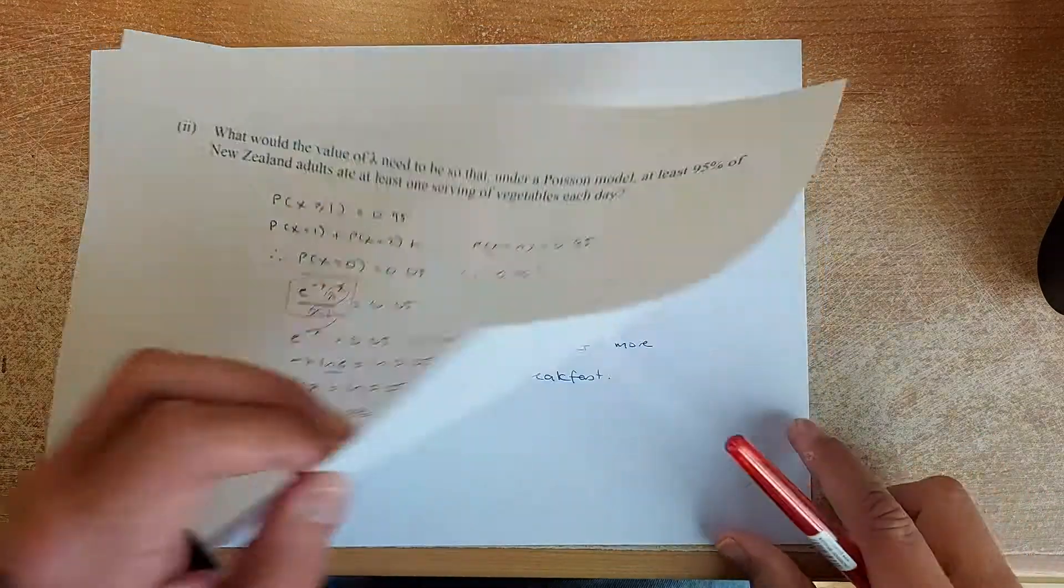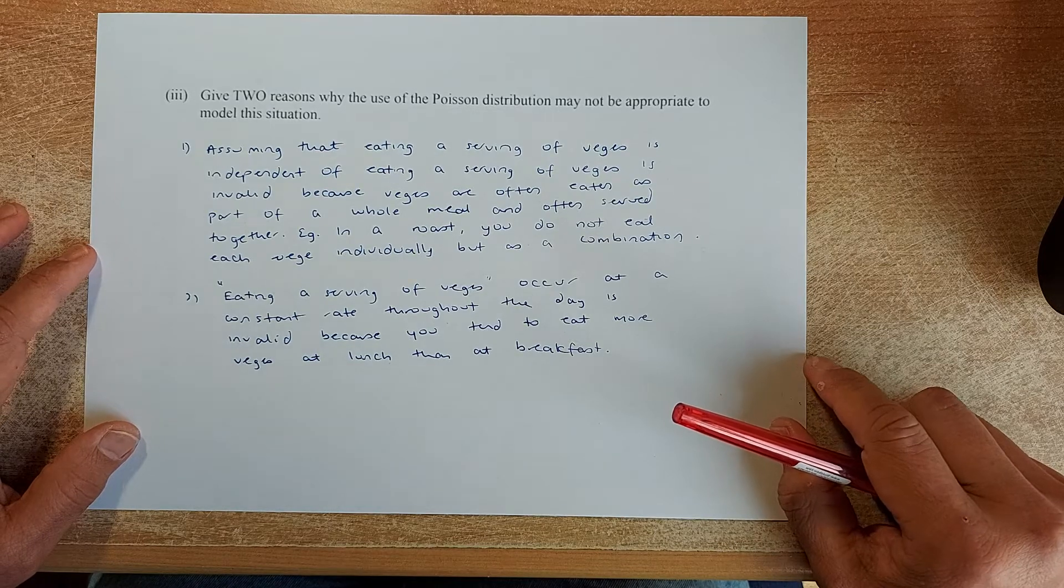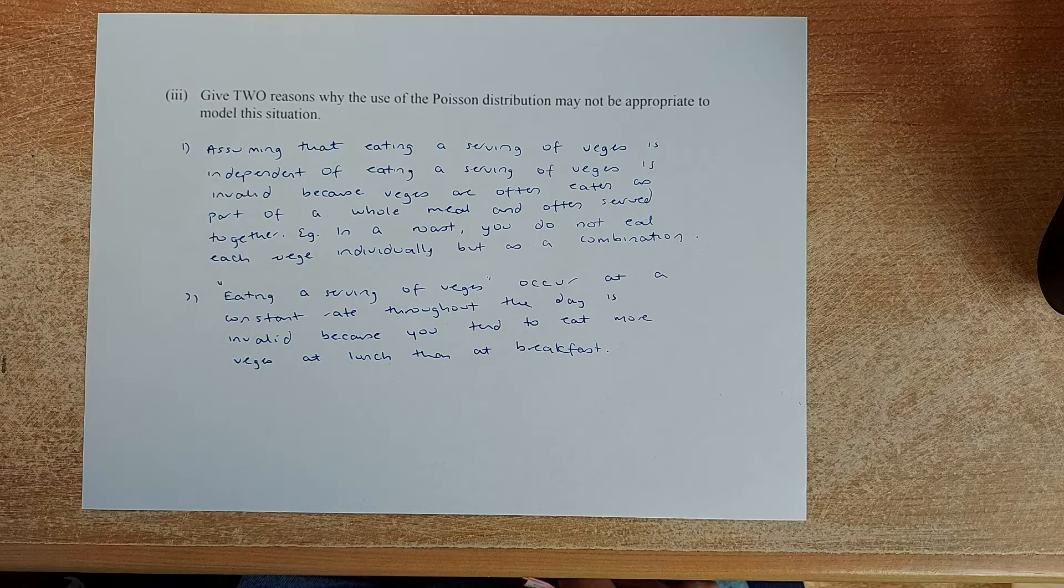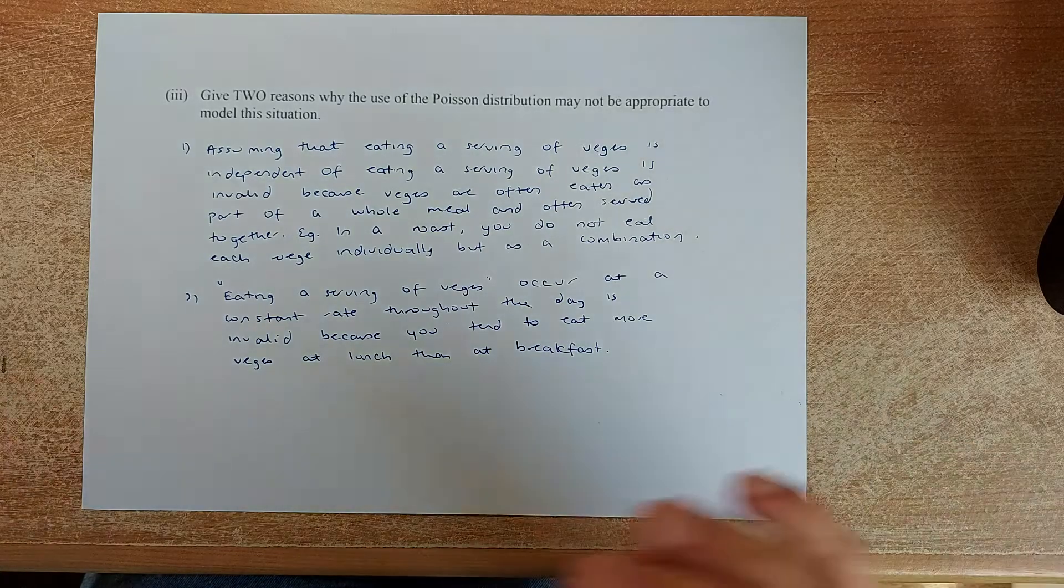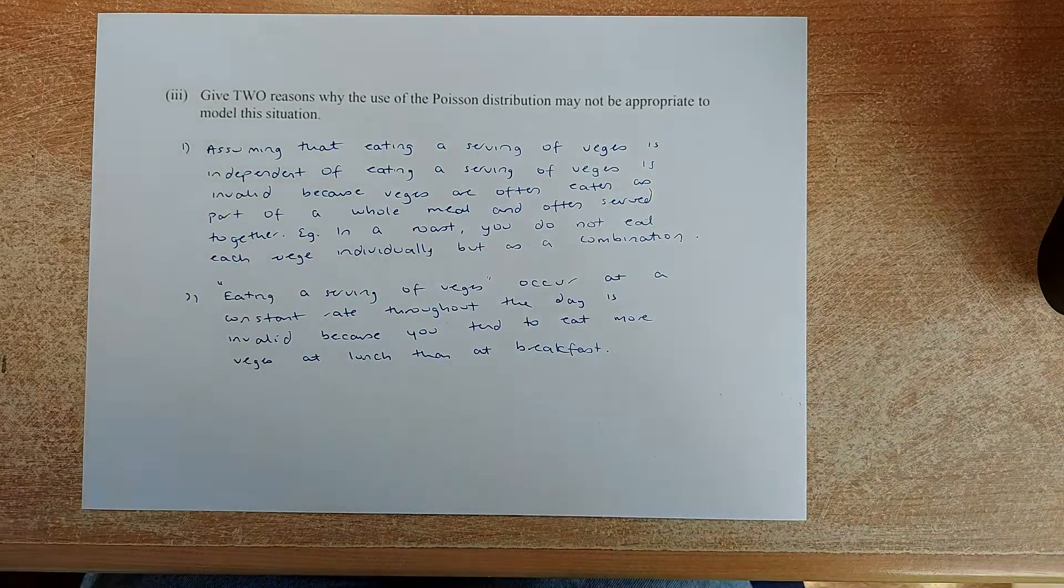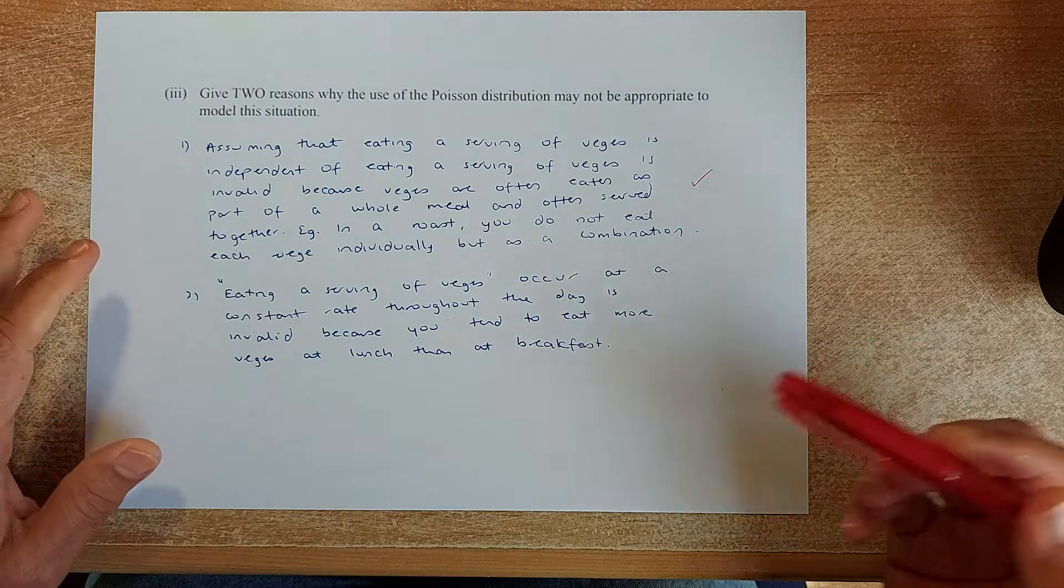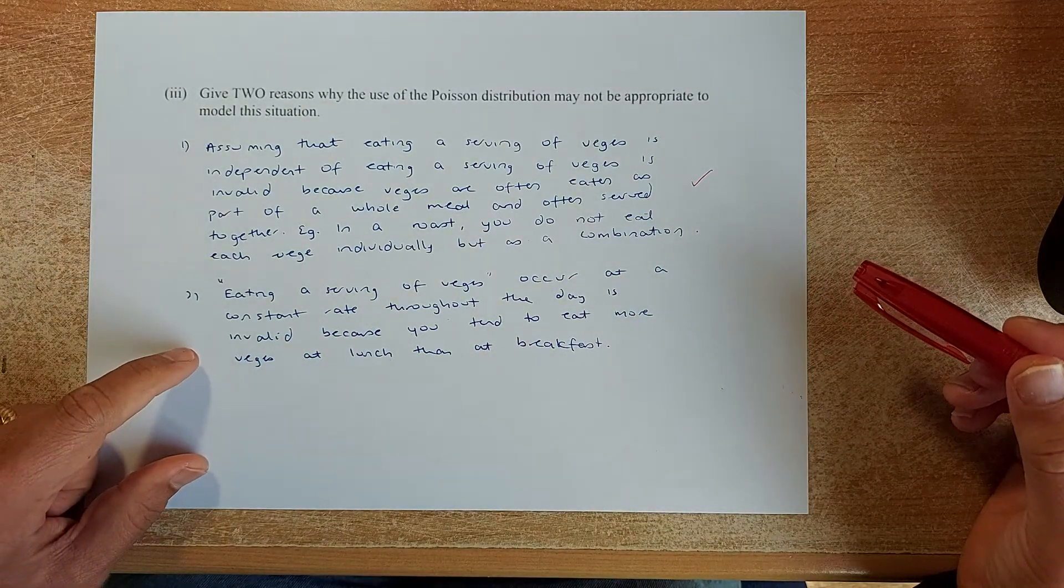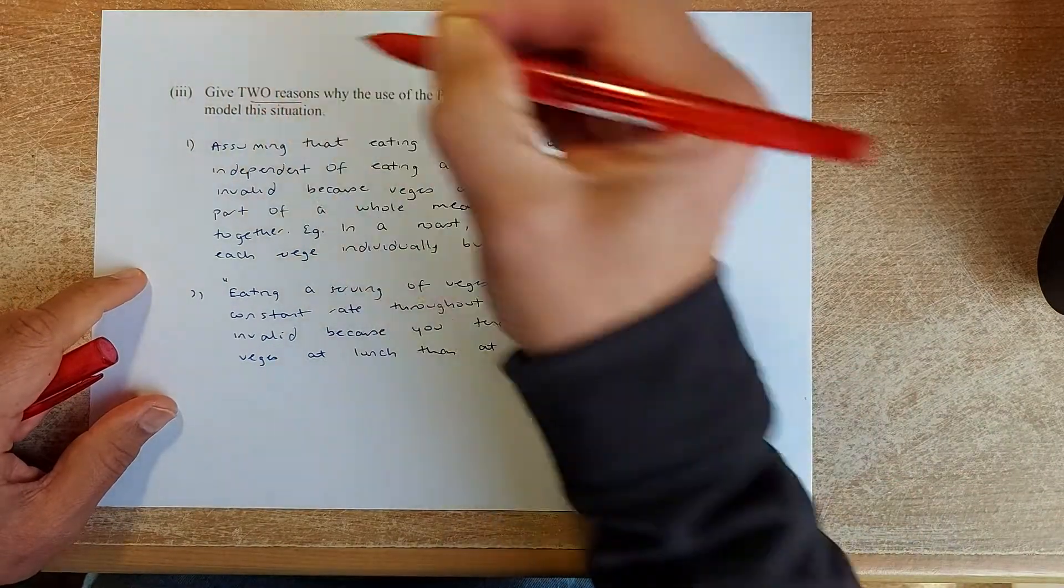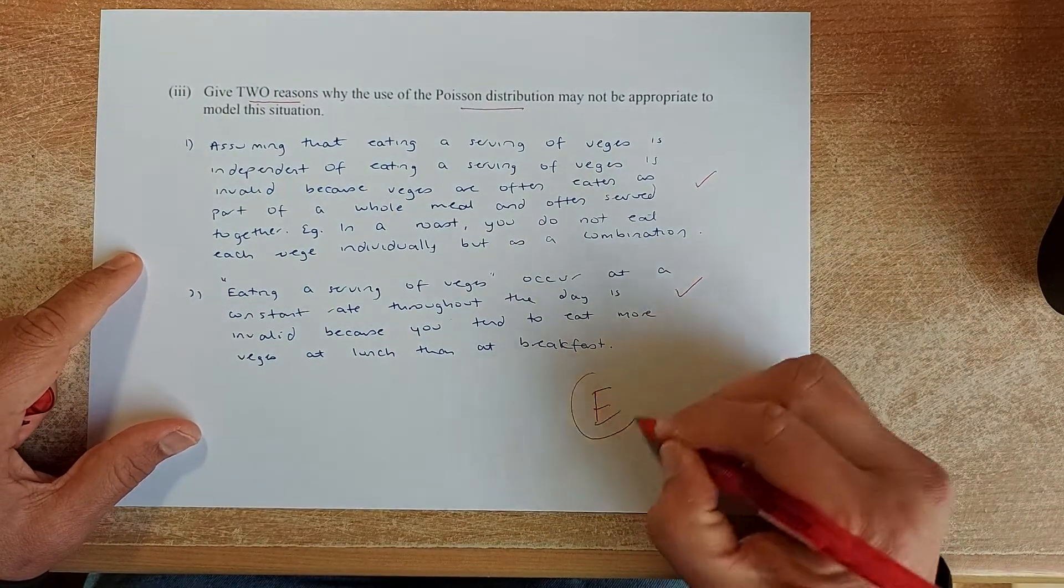Last but not least, that is the more theoretical question. Give two reasons why the Poisson distribution may not be appropriate to model this situation. Assume that eating a serving of veggies is independent of eating a serving of veggies is invalid because veggies are often eaten as part of a whole meal and often served together. So for example, in a roast, you do not eat each veggie individually but you eat that as a combination of veggies. Look through the marking schedule. They give you a more detailed answer. And eating a serving of veggies occur at a constant rate throughout the day is invalid. Why? Because you tend to eat more veggies at lunch and dinner when compared to breakfast. So that is two reasons why the use of Poisson distribution may not be appropriate to model this situation. If you can answer both of them, that will give you an excellence in this paper.